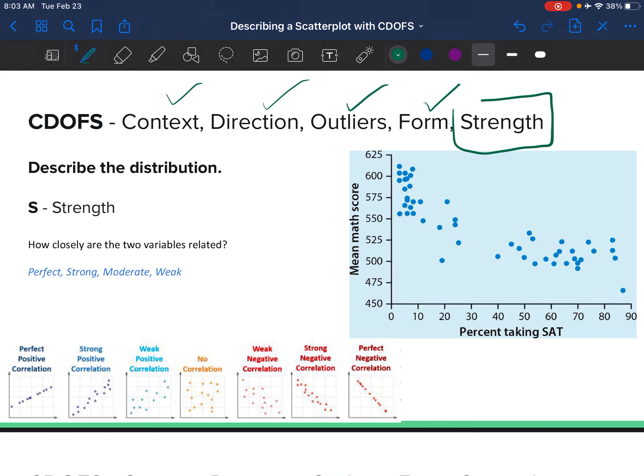We have our context, direction, outlier, form, and our last part now is strength—how closely are the two variables related? When I draw this line, I'm looking to see how closely they are related. If they are on the line, that is going to be a perfect correlation, and the further away they get from the line, the weaker it becomes.